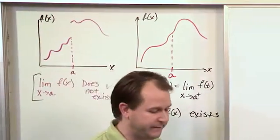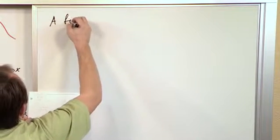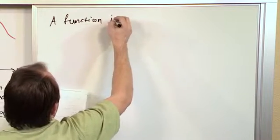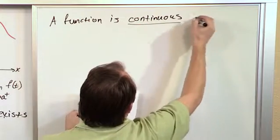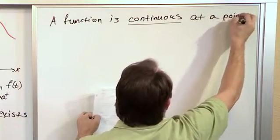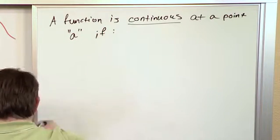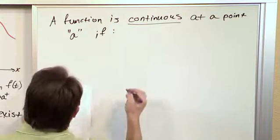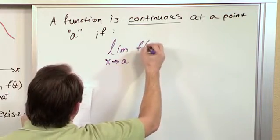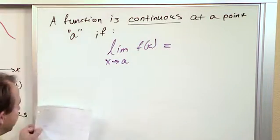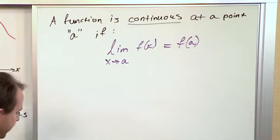So a definition that you'll find in your book is a function is continuous at a point. The point we're always talking about is the point a if, and I know you can guess the punchline because we've drawn it on the board, if the limit as x approaches a of f of x, get ready for the punchline, is equal to the function evaluated at a.